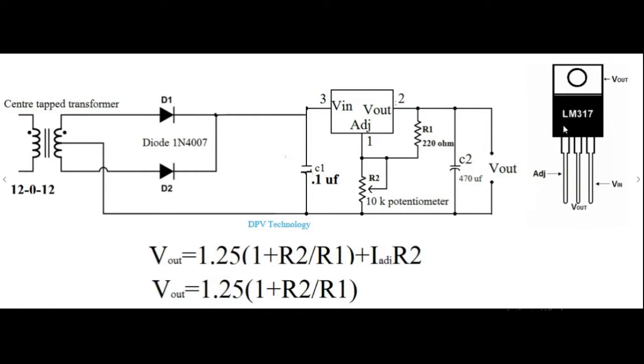The LM317 is an adjustable three terminal positive voltage regulator. The three terminals are known as VIN (that means input terminal), VOUT (that means output terminal), and ADJ (that means adjustable terminal). By using this regulator we will be able to get output voltage from 1.2 volts to 37 volts.